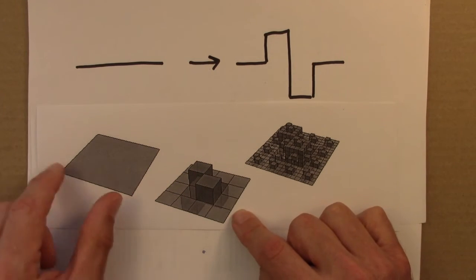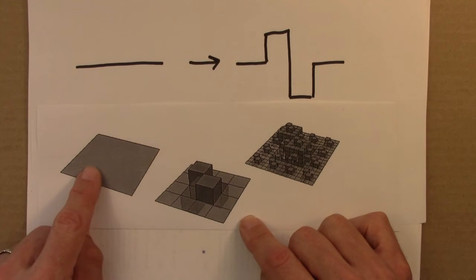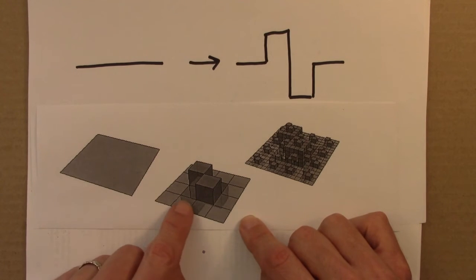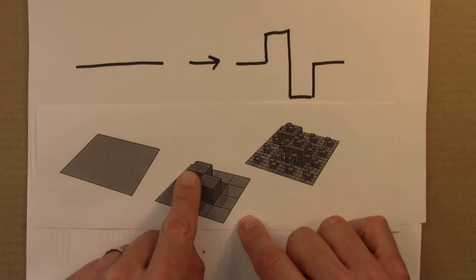And then we could repeat that. We now have 16 surfaces instead of 1, so 16 little squares. 1, 2, 3, 4, 5, 6, that one's up high. 7, that one's down low and so on.